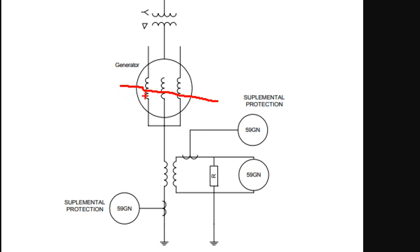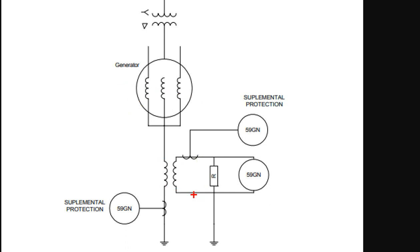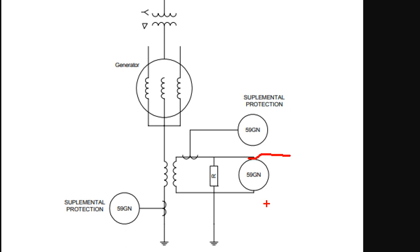Here is an example: if the fault is near the neutral point (the corner), the voltage is very low — you have sufficient voltage in that condition. In that condition, we will protect it. We use this scheme to protect 5% of the stator that remains unprotected.